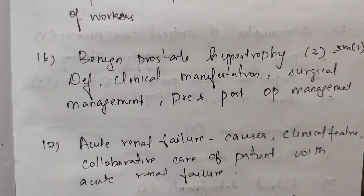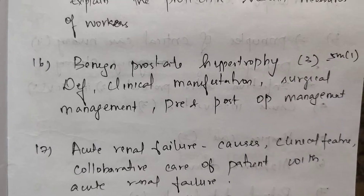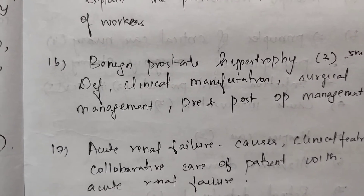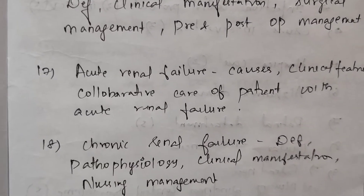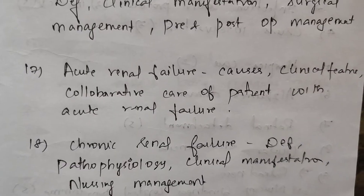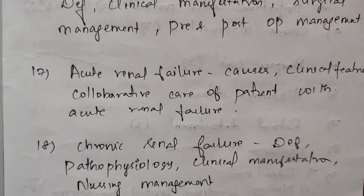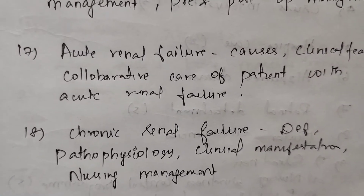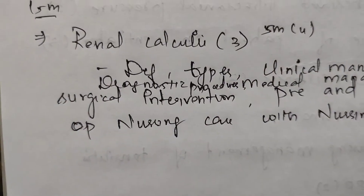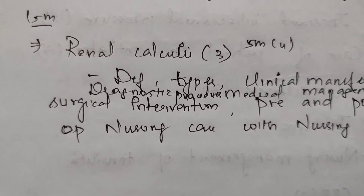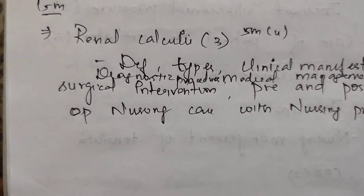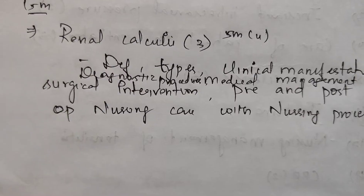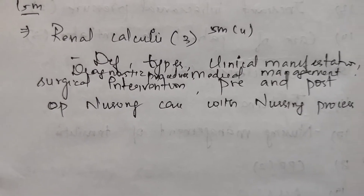Next, benign prostate hypertrophy — three times — in 5 marks: definition, clinical manifestation, surgical management, pre- and post-op management. Next, acute renal failure: causes, clinical features, and collaborative care. Chronic renal failure: definition, pathophysiology, clinical manifestation, and nursing management. Next, renal calculi — three times — in 15 marks, 5 marks four times: definition, types, clinical manifestation, diagnostic procedure, medical management, surgical intervention, pre- and post-op nursing care with nursing process.